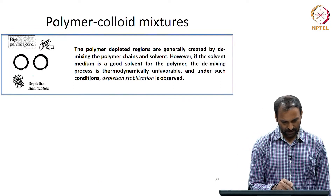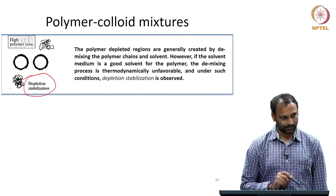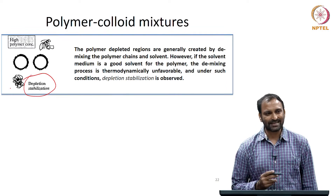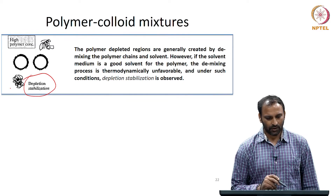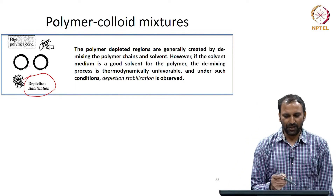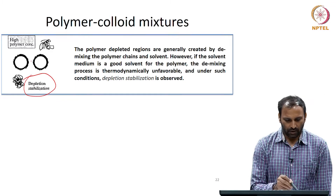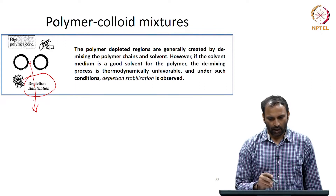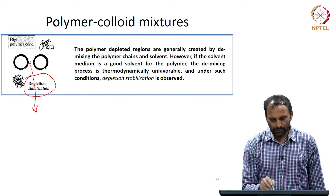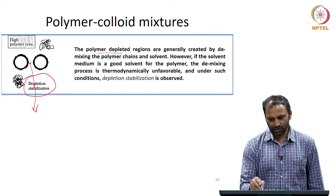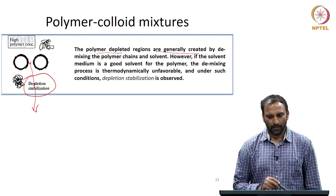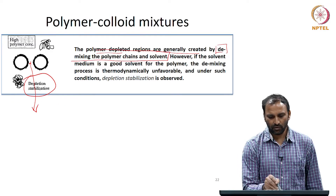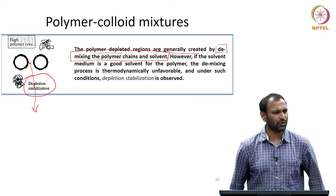Another concept is what is called depletion stabilization. When we say that, we mentioned that for the depletion attraction to occur, the polymers have to move out of the gap. The polymer depleted regions are generally created by demixing of the polymer chains and the solvent.